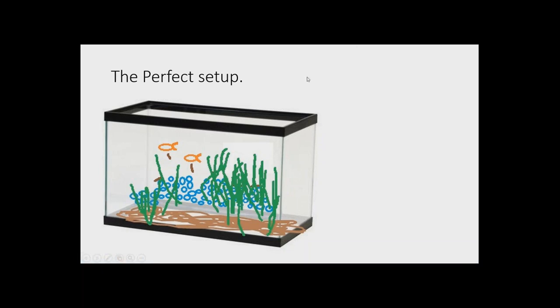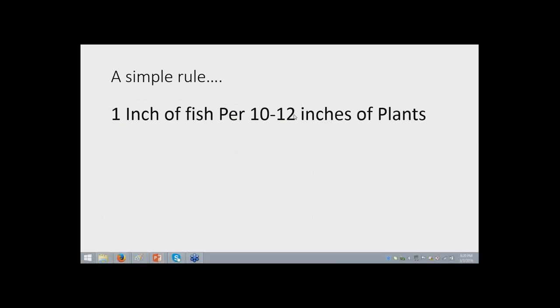Here's a simple rule that I like to run with. Everybody wants a rule. Forget one inch of fish per gallon of water. How about this? How about one inch of fish for every foot of plants you have? One inch of fish per 10 to 12 inches of plants. Obviously, a one inch goldfish has a wider body and bigger dumps than a one inch something else. But you get the idea. And then plants are all different. But it's a general, simple rule.